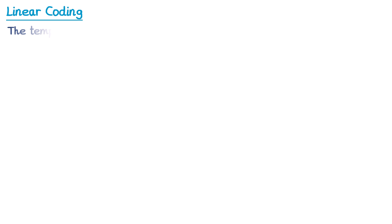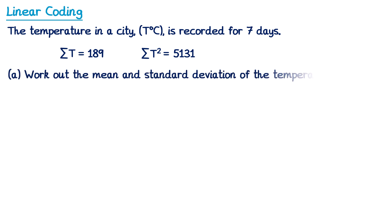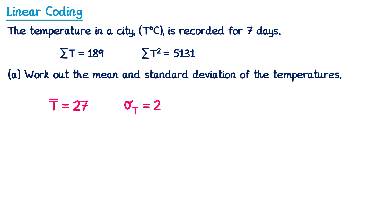Let's try another example. The temperature in a city is recorded for 7 days, and we're given some summary information. We need to work out the mean and standard deviation for the temperatures. To work out t bar, we do the sum of t over n. The sum of t is 189 and n is 7 days, giving a mean of 27. Then to work out the standard deviation, the sum of t squared is 5131, n is 7, and t bar is 27. If you type this into the calculator, you'll find the standard deviation is 2.